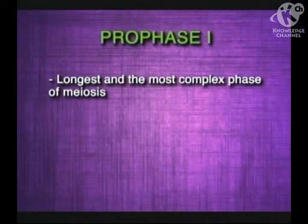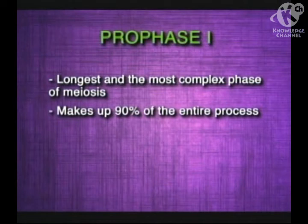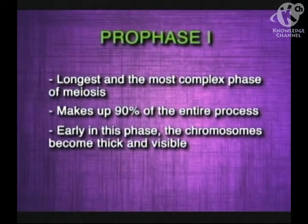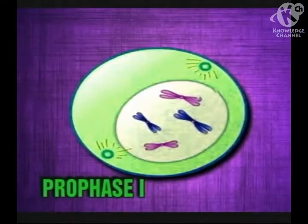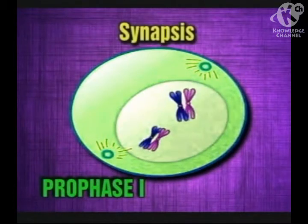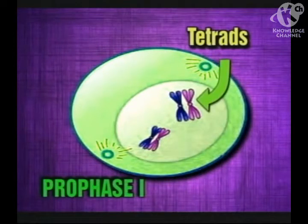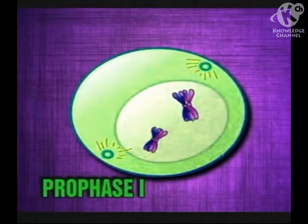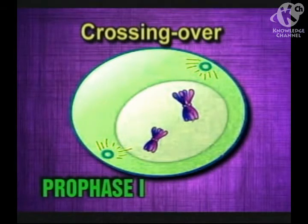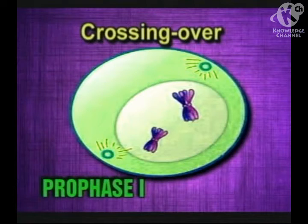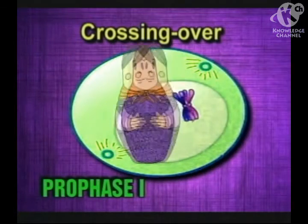Prophase I is the longest and most complex phase of meiosis, making up 90% of the entire process. Early in this phase the chromosomes become thick and visible, and homologous pairs of chromosomes come together. In a process called synapsis, the two sister chromatids of each chromosome pair up with the chromatids of its homologue and form a structure called a tetrad. Each tetrad has four chromatids. During synapsis, chromatids of homologous chromosomes exchange segments — this process is called crossing over. Crossing over results in an exchange of genes between pairs of homologous chromosomes, and it only occurs during prophase I. After crossing over, the gene combination of each chromosome in the homologous pair is no longer the same as it was before meiosis.